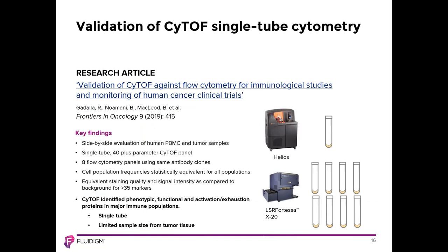Many papers over the years have compared mass and flow cytometry results side by side. Here's a very recent example from David Brooks' lab at Princess Margaret Hospital University Health Network in Toronto. The authors did a side-by-side evaluation of human PBMC and tumor samples analyzed by CyTOF and flow cytometry. A single-tube, 40-parameter CyTOF panel was used and compared to an eight-panel flow cytometry approach using the same antibody clones. Cell population frequencies were found to be statistically equivalent for all populations, and equivalent staining quality and signal intensity was also observed for more than 35 markers. CyTOF identified phenotypic, functional, and activation exhaustion proteins in major immune populations in a single tube from a limited sample size from tumor tissue.